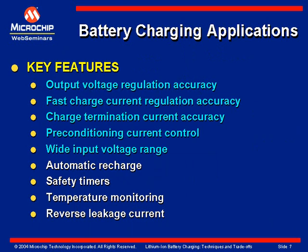Some of the key features of the MCP7384X family include output voltage accuracy, which is one of the big key features of charging lithium-ion batteries. You want to charge them to no worse than plus or minus one percent of the cell voltage at 4.2 volts — this gets the most capacity out of the battery with tight voltage regulation. The fast charge current is important to keep charge cycle times as short as possible and to control power dissipation and thermal issues in your system.